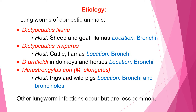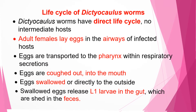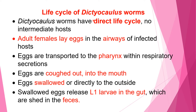Metastrongylus apri, also called Metastrongylus elongatus, affects pigs and wild pigs, and is located in the bronchi and bronchioles. There are many other lungworms that cause infection, but their occurrence is very rare, so they are not mentioned here. In summary, we have two main parasite groups: Dictyocaulus and Metastrongylus. We will now examine the life cycle of both.